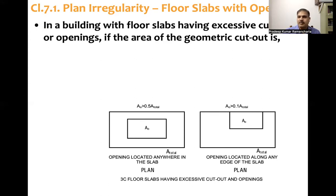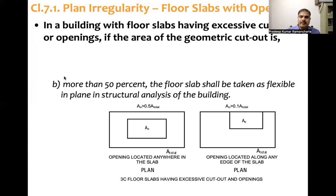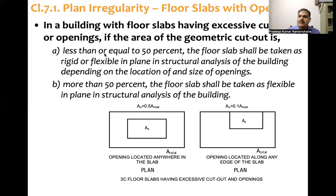Flexible floor diaphragm action will apply. What the code says is: in a building with floor slabs having excessive cutouts or openings, if the area of the geometric cutout is less than or equal to 50 percent, the floor slab shall be taken as rigid or flexible in the in-plane structural analysis of the building depending on the location and size of the opening. If it is more than 50 percent, the floor slab shall be taken as flexible in the in-plane structural analysis of the building.